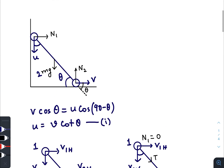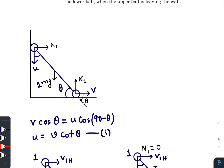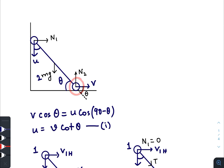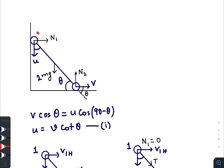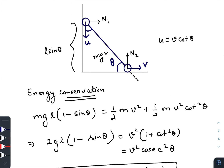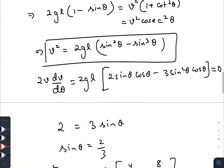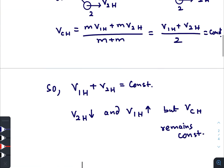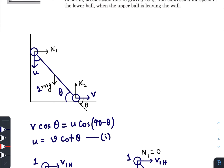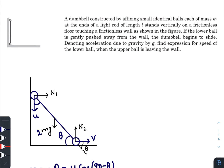Just remember: initially the speed of the lower mass is increasing. When the upper mass loses contact with the vertical wall, the lower ball's speed starts to decrease, because to keep the horizontal component of center of mass velocity constant, its velocity must decrease as the upper ball's horizontal velocity starts increasing. That is the answer to this question. I hope you found this video helpful and informative. If you liked the video please give a thumbs up, and if you are new to this channel please subscribe. See you in the next one!